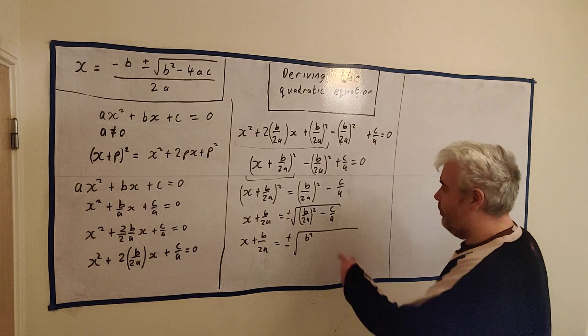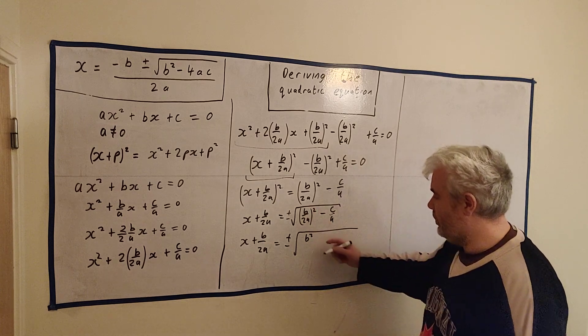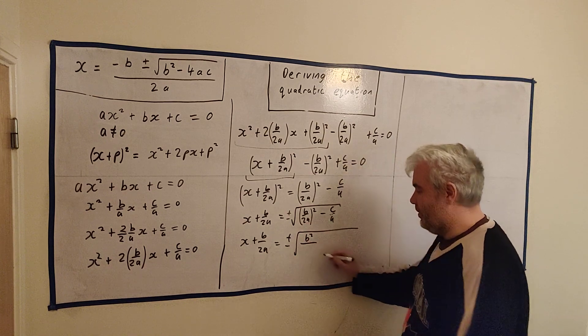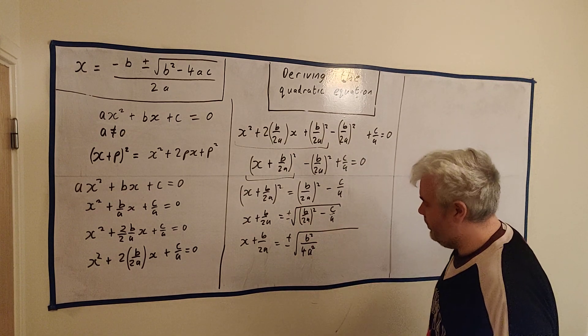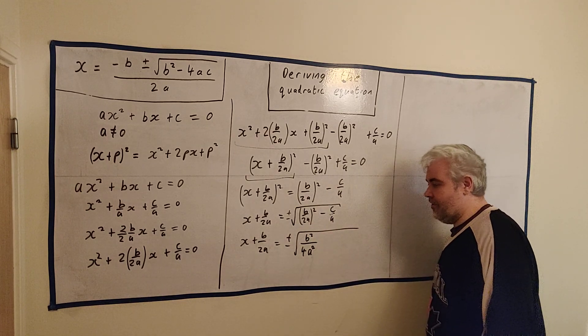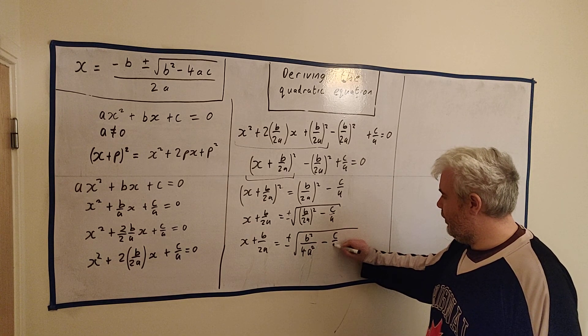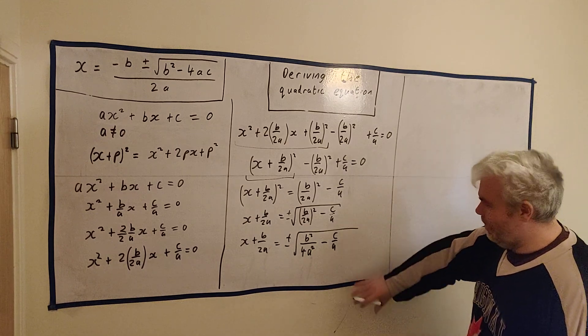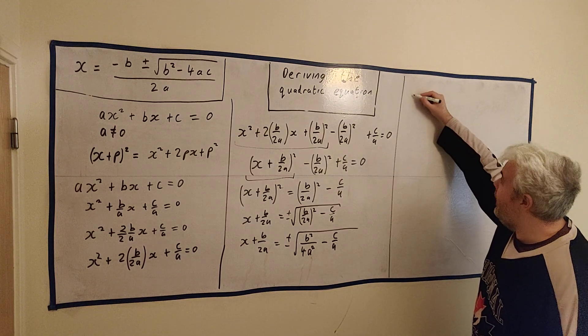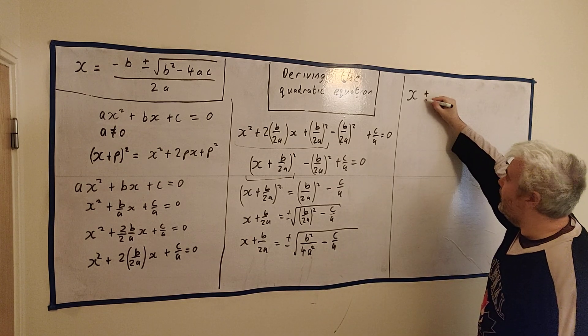x plus b over 2a equals plus or minus. Right. Well, first of all, let's multiply this out. If we get the square of a bracket, we can get the square in the top row and the square of the bottom row. If we get the square of two different items, we can do some separately. b squared over 4a squared. We'll cover this more when we do indices. Powers, indices, and stuff like that. For now, just take my word, I think. Minus c over a. It's going to take a bit of writing. But I'll spend a few lines cleaning this up. I think I have the space.